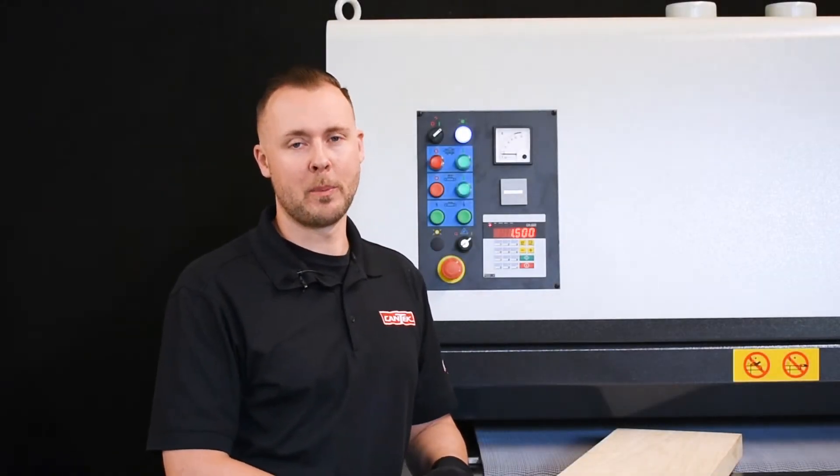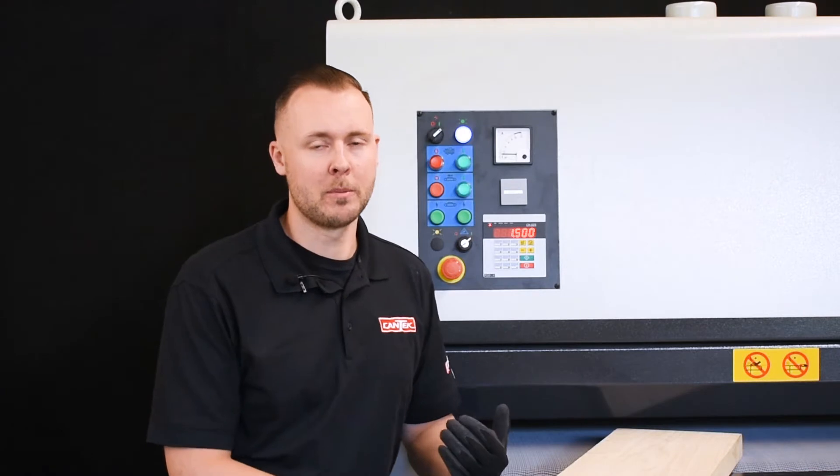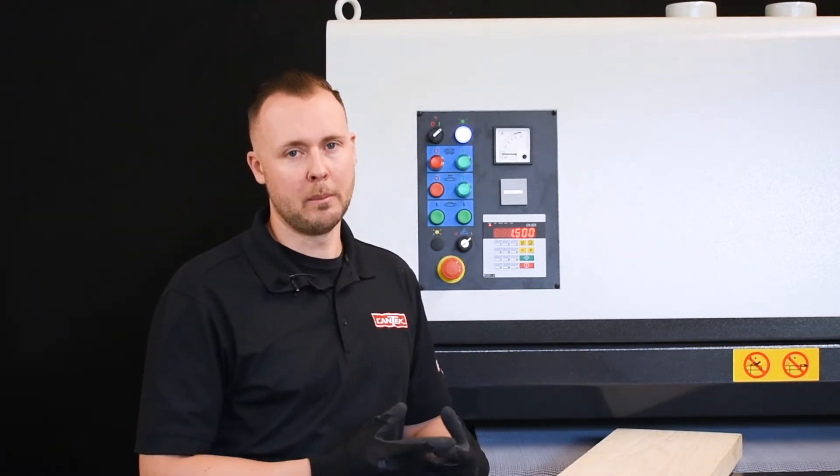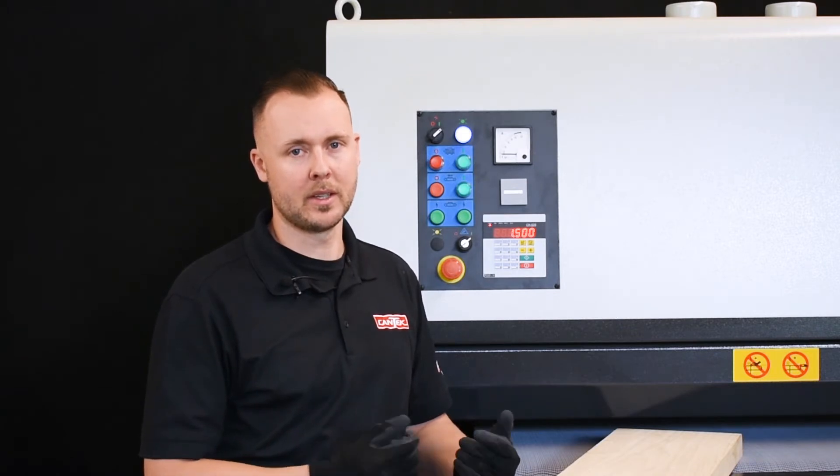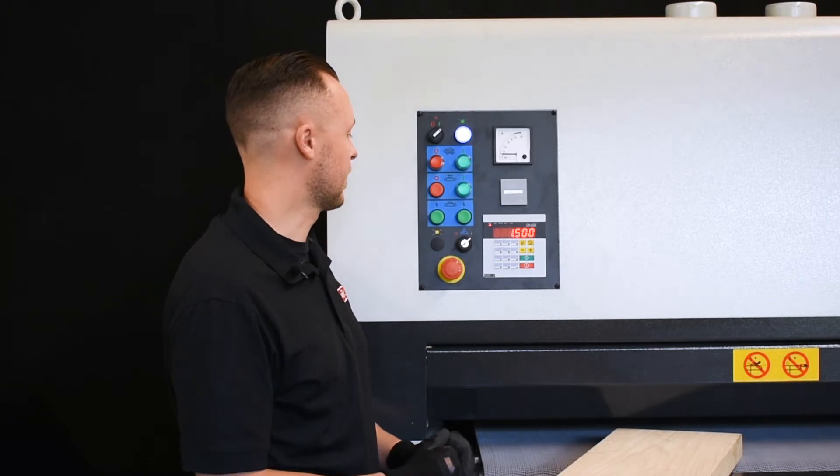In this video we're going to go through some of the basic operations and troubleshooting of the CH525 control. This control can be found on a lot of different models and machines, typically resaws, planers, sanders. I'm just going to take you through some of the basic features of this control.